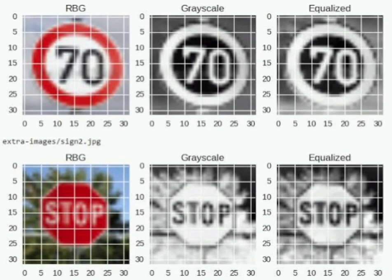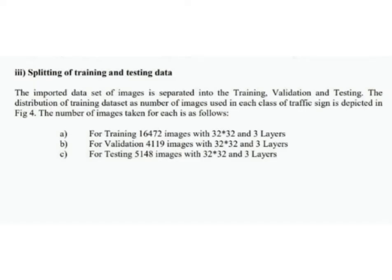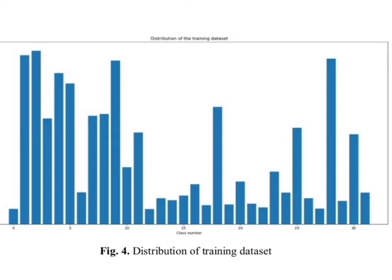For pre-processing of data, the images are resized to 32×32 pixels, then converted into grayscale and histogram-equalized before being given to the model for testing. For splitting of training and testing data, the imported dataset is separated into training, validation, and testing sets. For training we took 16,472 images at 32×32 pixels with 3 channels; for validation, 4,119 images at 32×32 pixels with 3 channels; and for testing, 5,148 images at 32×32 pixels with 3 channels.